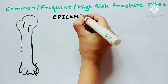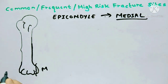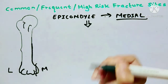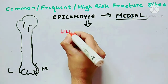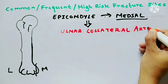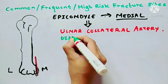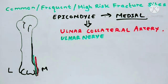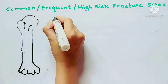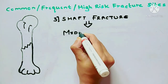Talking about epicondyle fractures of the humerus, the medial epicondyle is likely to get fractured. Here the potential damage occurs to the ulnar collateral artery and the ulnar nerve. In the image, red shows the ulnar collateral artery and green shows the ulnar nerve.